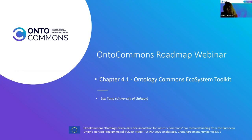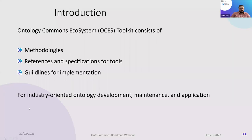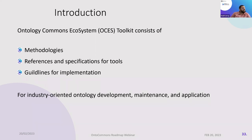Next is a presentation on the OntoCommons Ecosystem Toolkit, presented on behalf of Lan Young. The OntoCommons ecosystem toolkit will consist of methodologies, references, and specifications for tools, and guidelines for implementation — essentially an industry-oriented ontology development, maintenance, and application ecosystem including methodology and tools. From community surveys, workshops, and webinars, inputs from stakeholders were structured into two categories: functional needs — people are interested in integrated components that perform specific tasks in ontology engineering — and non-functional needs — more flexible, open, and robust architecture with interoperable interfaces and collaborative settings.